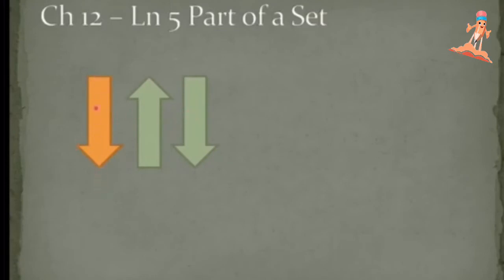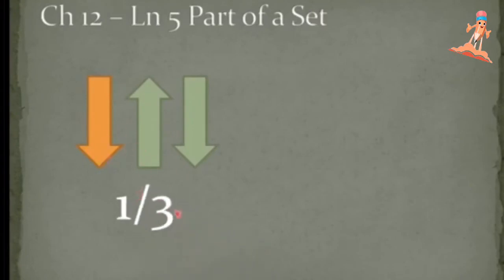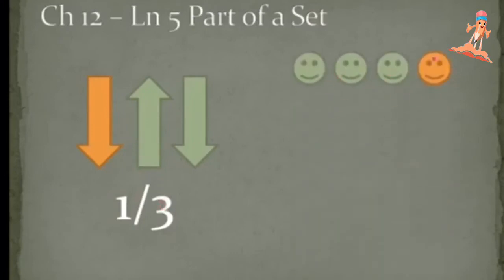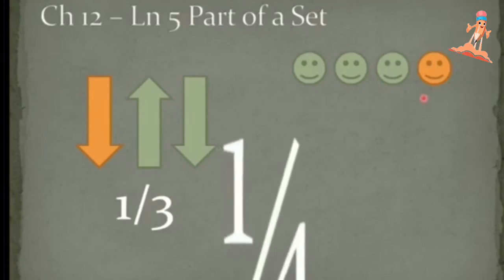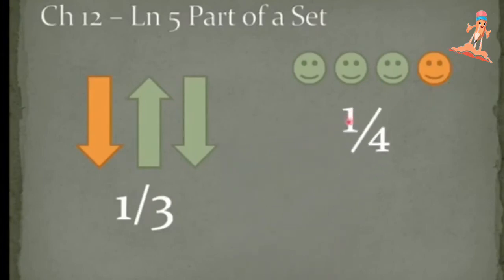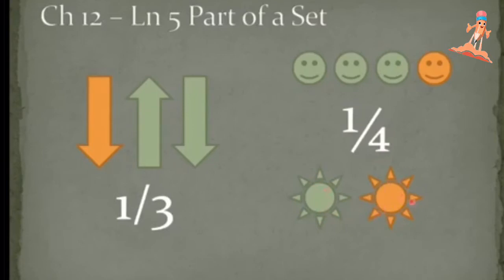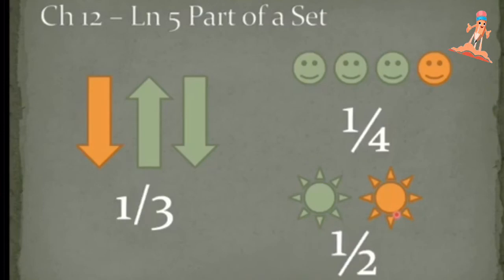One is shaded, so it is one third — one of three. How many smileys are here? One, two, three, four — and how many are colored? One. So it is one fourth. Now how many suns are here? Two. How many are colored? One. So it is one half.